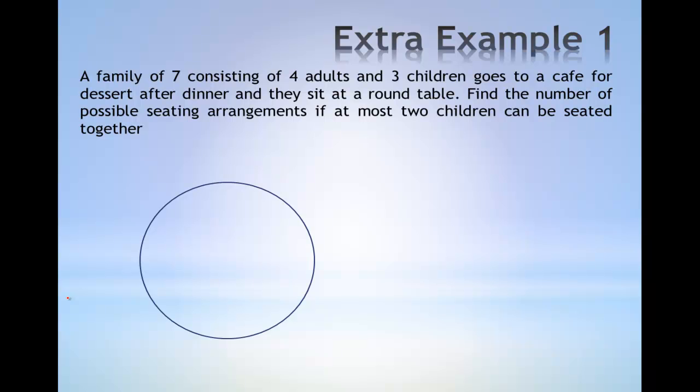Extra example 1. A family of 7 consisting of 4 adults and 3 children goes to a cafe for dessert after dinner and they sit at a round table. Find the number of seating arrangements if at most two children can be seated together.